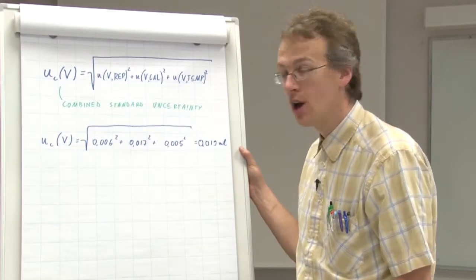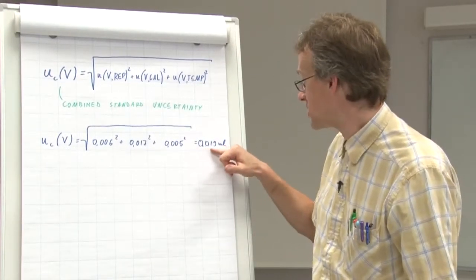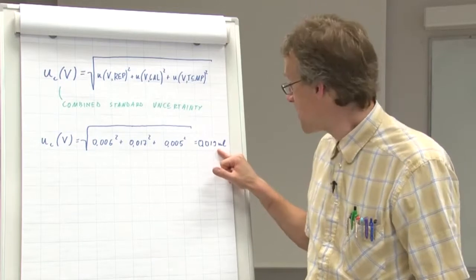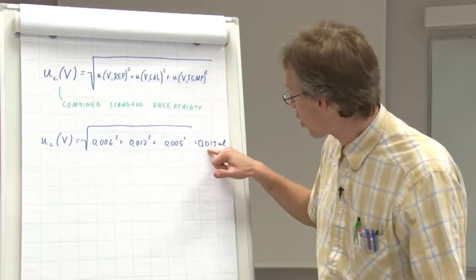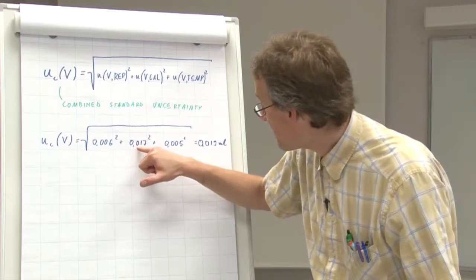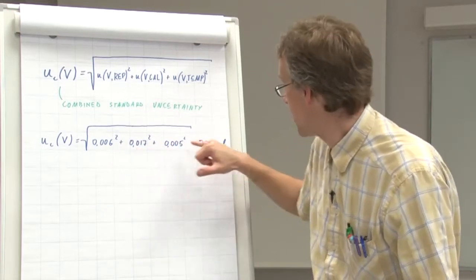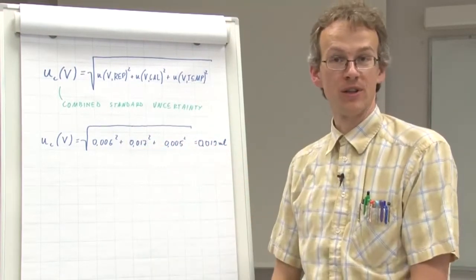However, what we see here, we have only 0.019. So we see that actually the combined standard uncertainty is quite similar by its magnitude to one of the uncertainty components.